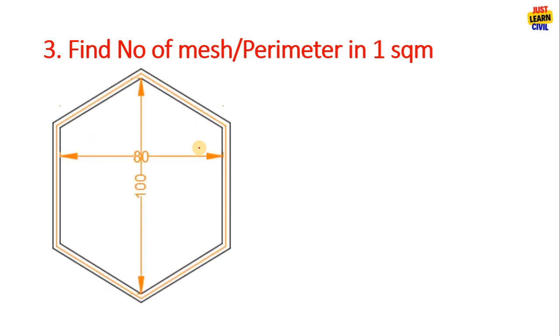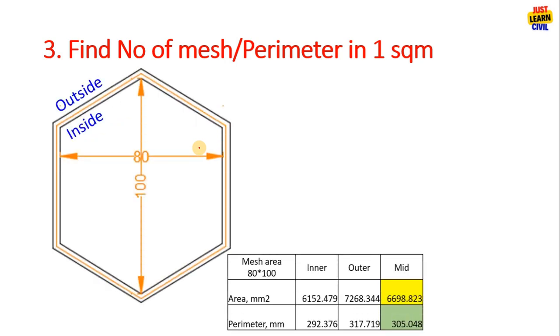Now let us find the number of mesh. We have the area of one mesh and perimeter of one mesh.